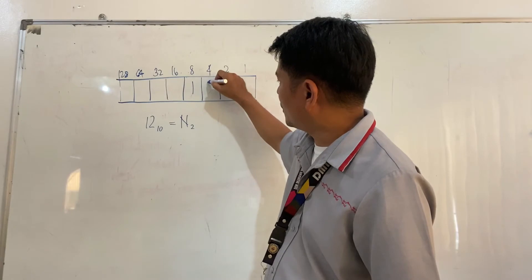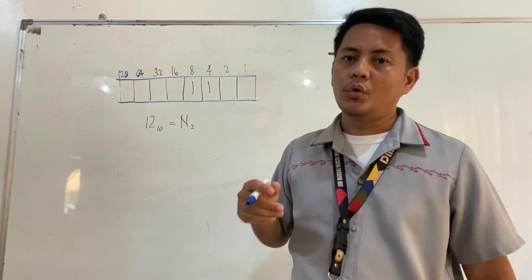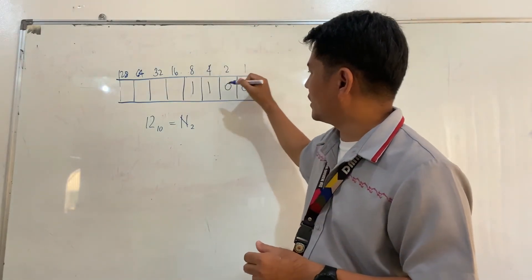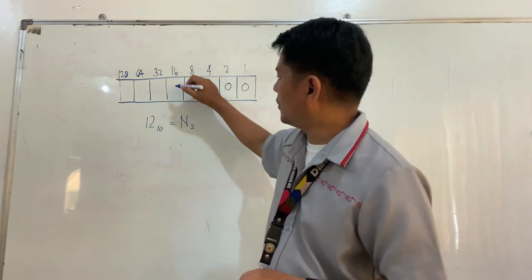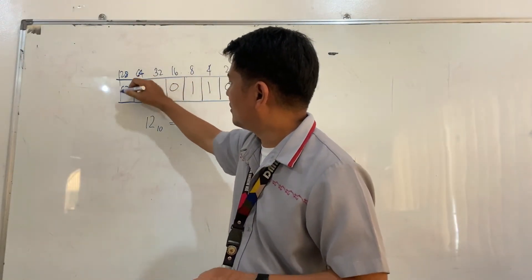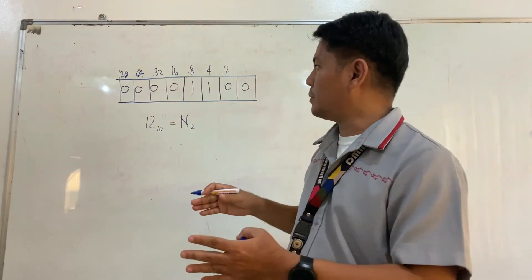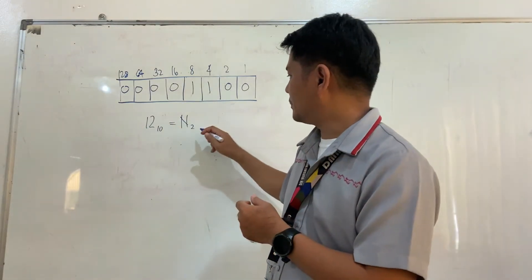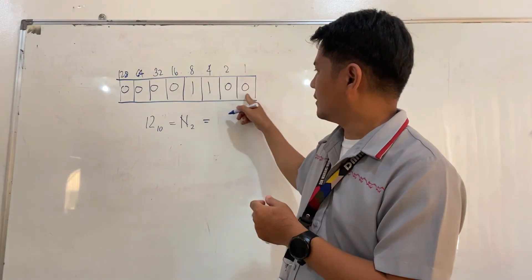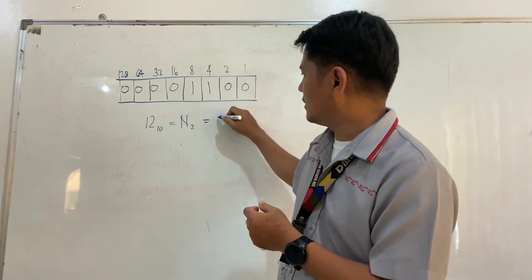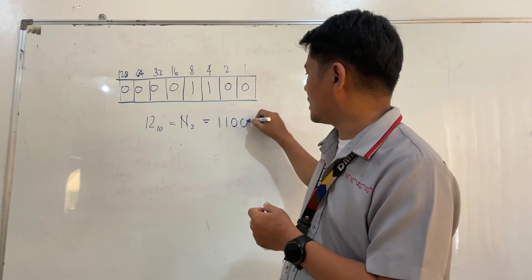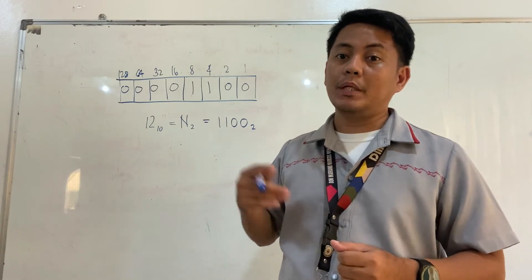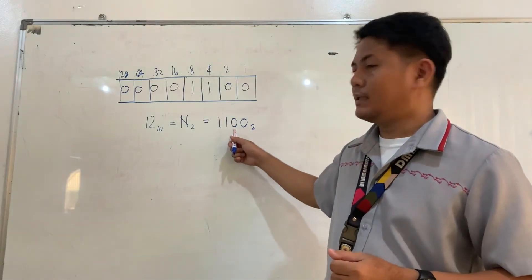The rest of the boxes we turn to 0. Leading zeros before a significant number can be omitted, so we simply rewrite it. Copying from the first significant bit: 1, 1, 0, 0, base 2 — which is the same result as our previous example: 1100.